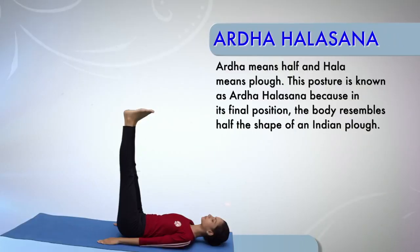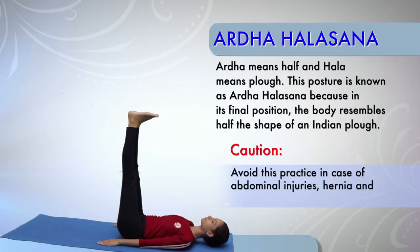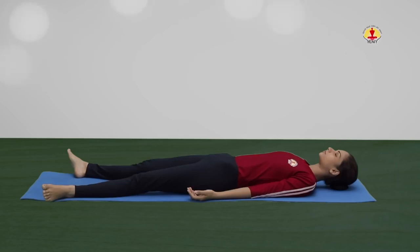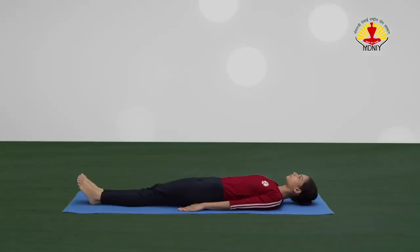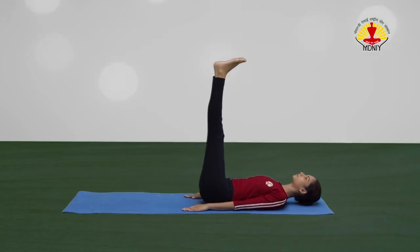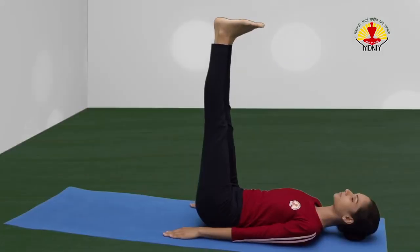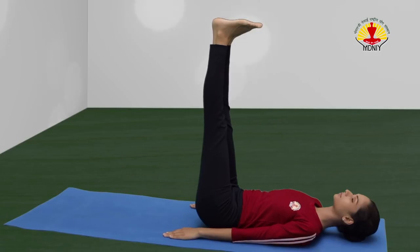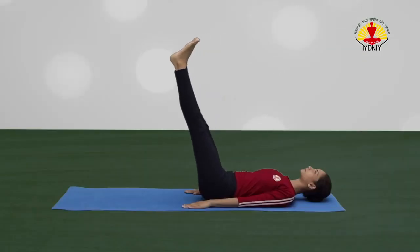Ardha Halasana or the Half Plough Posture. Caution! Avoid this practice in case of abdominal injuries, hernia and lumbosacral pain. Keep hands by the sides of thighs, palms resting on the ground. Inhale and slowly raise your legs together without bending them at the knees, bringing them vertical to the ground. The body from hip to shoulder should be kept straight. Maintain the final position for three to ten breaths with body awareness. Exhale and slowly bring the legs down to the ground without lifting the head.